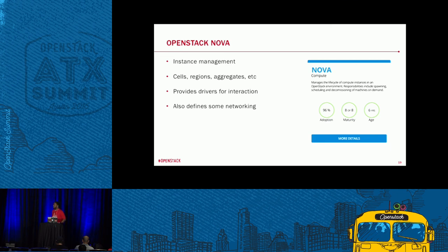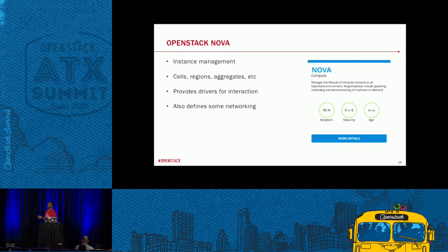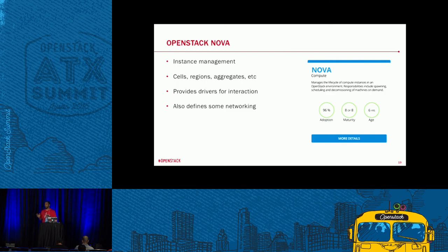OpenStack Nova is instance management — this is your virtual machine management. Nova takes care of managing the lifecycle of instances: the spinning up and spinning down, the destroying and creation of them. You have availability zones, regions, and aggregates, which allow you to divide up resources into different sections and apply metadata to those resources. For example, if you have servers with only SSD drives or a 40-gig internet connection versus 10 or 20, you can spin up resources in specific places.